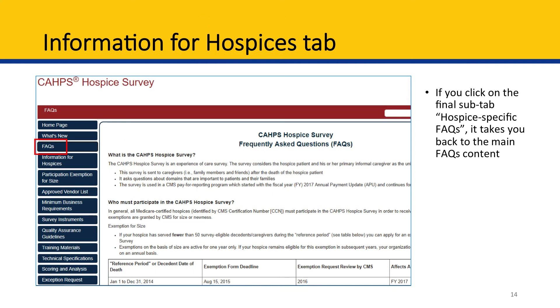The final sub-tab on the Information for Hospices page is the Hospice-Specific FAQs tab. This tab simply directs back to the FAQ page that we reviewed on slide 8.